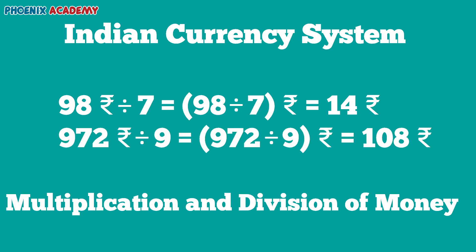Like that, we can divide 972 rupees by 9. Let's divide 972 by 9. We will get the quotient 108. So the answer is 108 rupees.